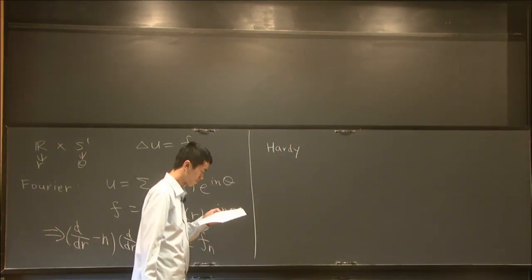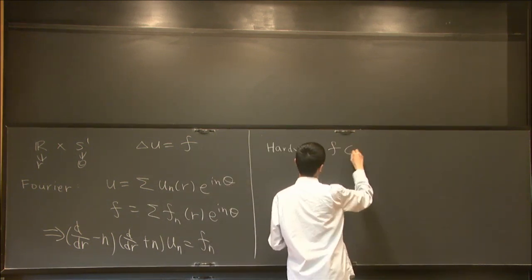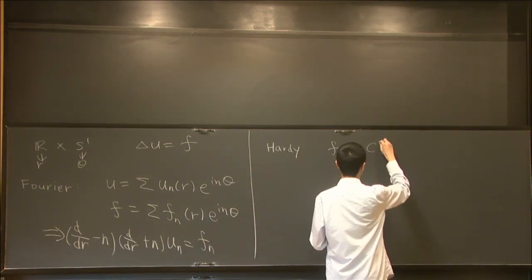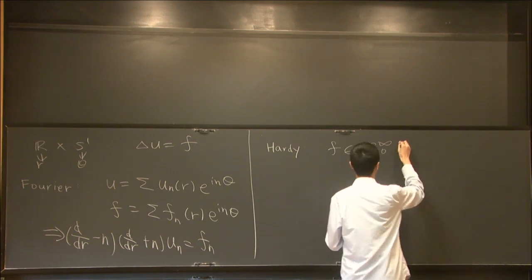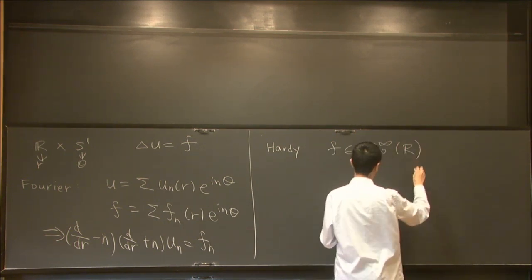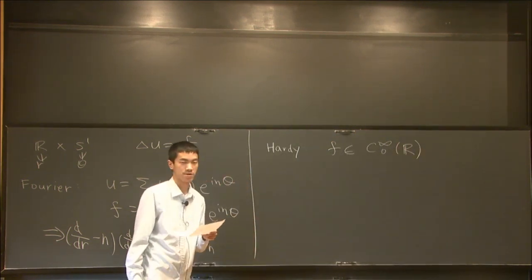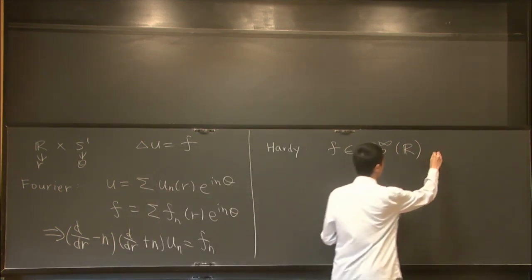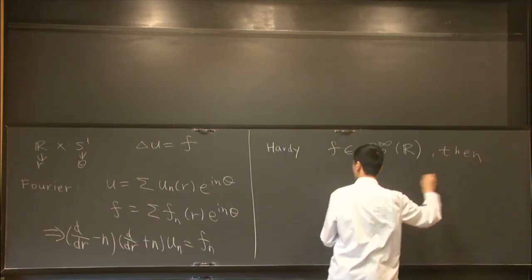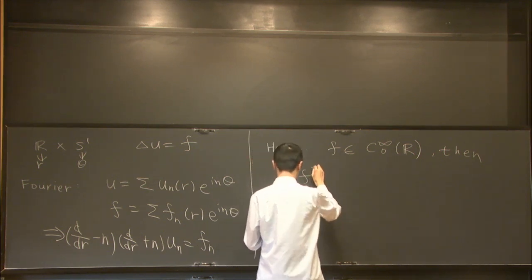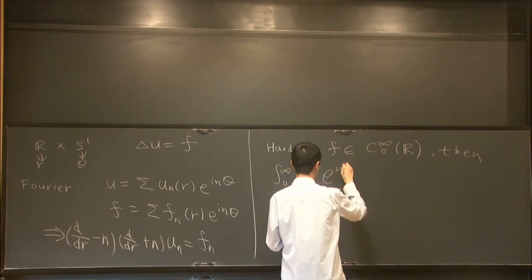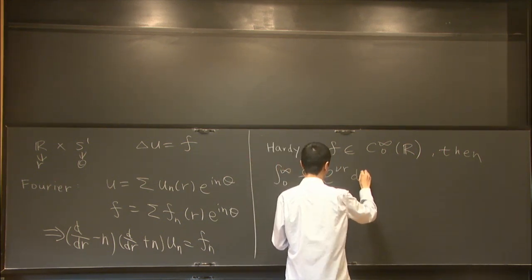He claimed that if F belongs to, a compact-supported smooth function on R, then integral from zero to infinity F squared e^{νr} dr.